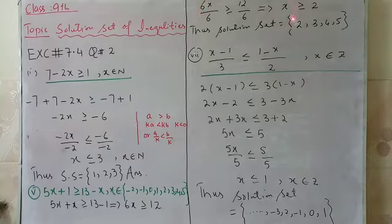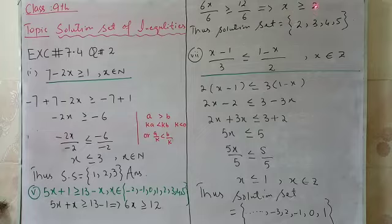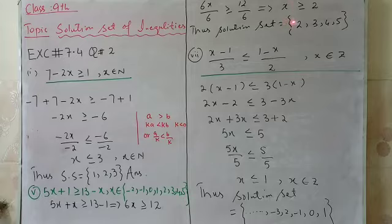6 cancels with 6, and 6 twos are 12, giving x is greater than or equal to 2. Now we have to choose only values that satisfy this condition and also belong to the given set. We take numbers equal to 2 and greater than 2 that belong to the set, so we take only 2, 3, 4, and 5. Thus the solution set is {2, 3, 4, 5}.